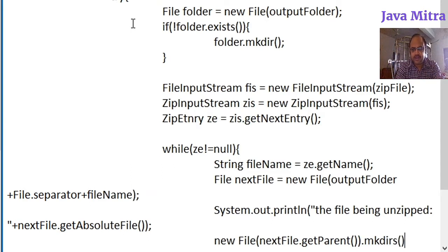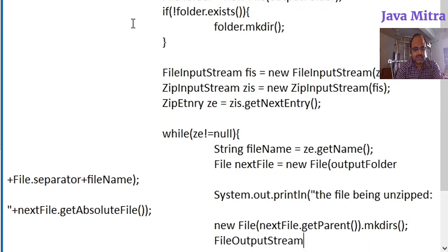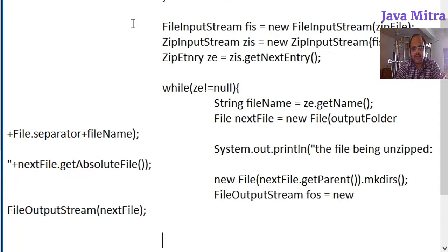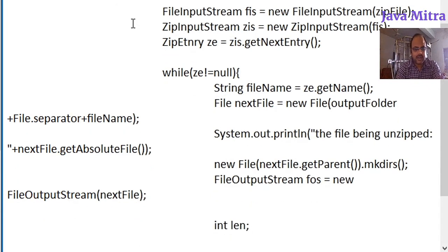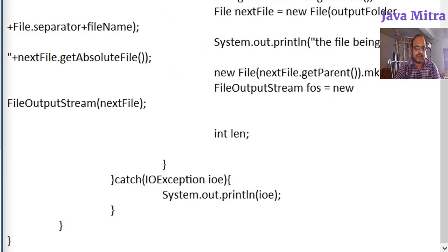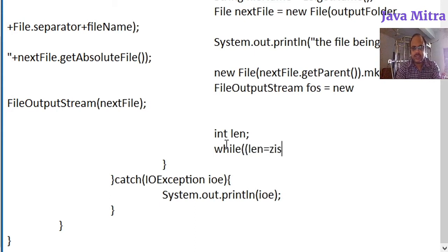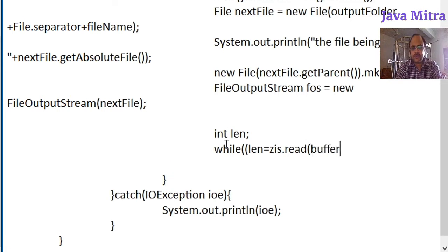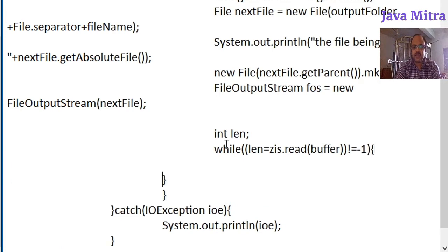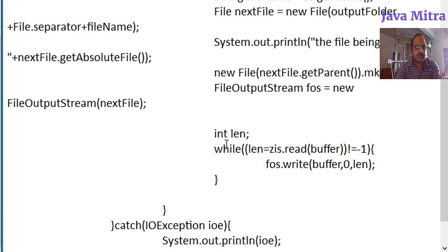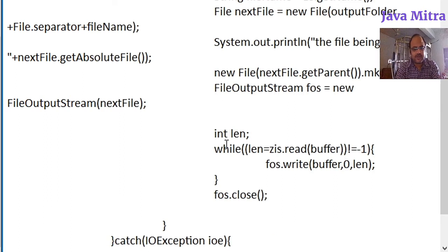Next, we create a directory if the file is inside some directory — getParent() gives the complete path and then we call the mkdirs() method so the complete folder structure will be created. Then we create a FileOutputStream object for the next file. We loop to write the content: while len equals zis.read(buffer) is not equal to minus one, we write the content into fos.